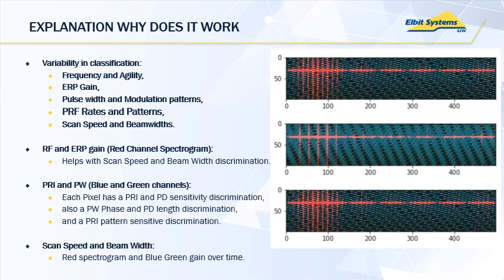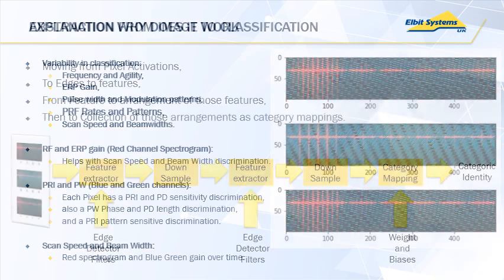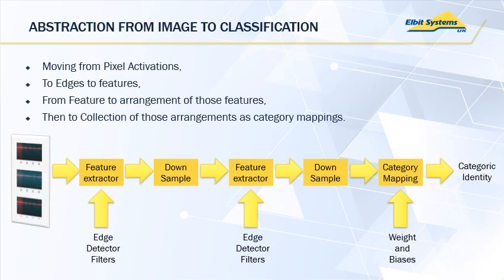For scan speed and beam width, we can see that in the red channel and the blue and green channels, gain over time is having an effect. All of those things are passed on to the later layer for the final categorization. Here is a clearer picture of the pipeline: on the left, the image; followed by feature extraction with edge-detecting filters; then downsampling; another feature extractor; followed by further downsampling and a categorization map.